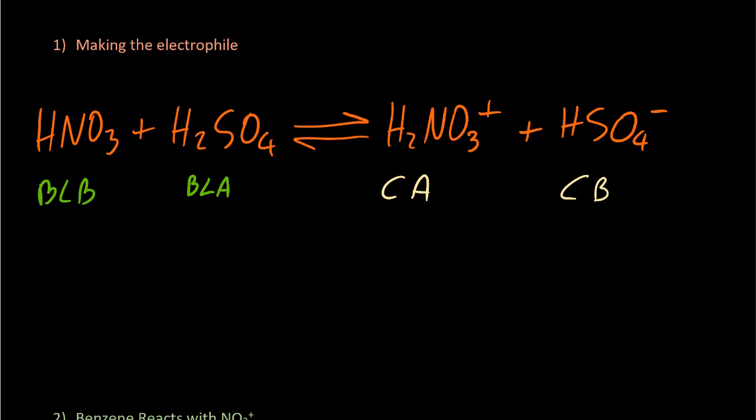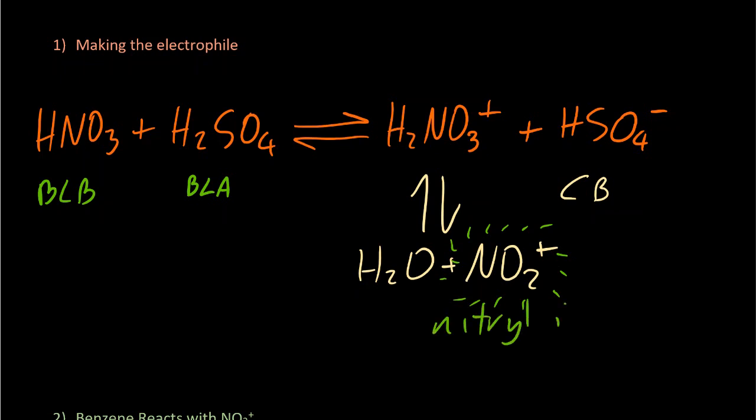We're not quite there though, because then this H2NO3+ is going to dissociate into water and NO2+. And it's this NO2+ that is the electrophile, the thing that likes electrons. It's called the nitrile ion, or you could also call it the nitronium ion.